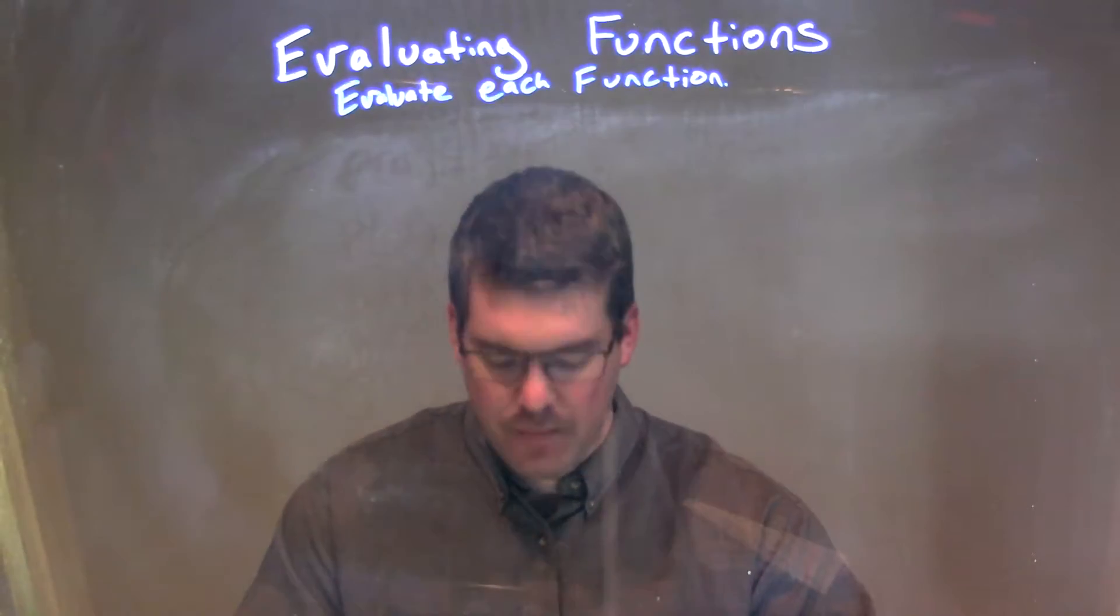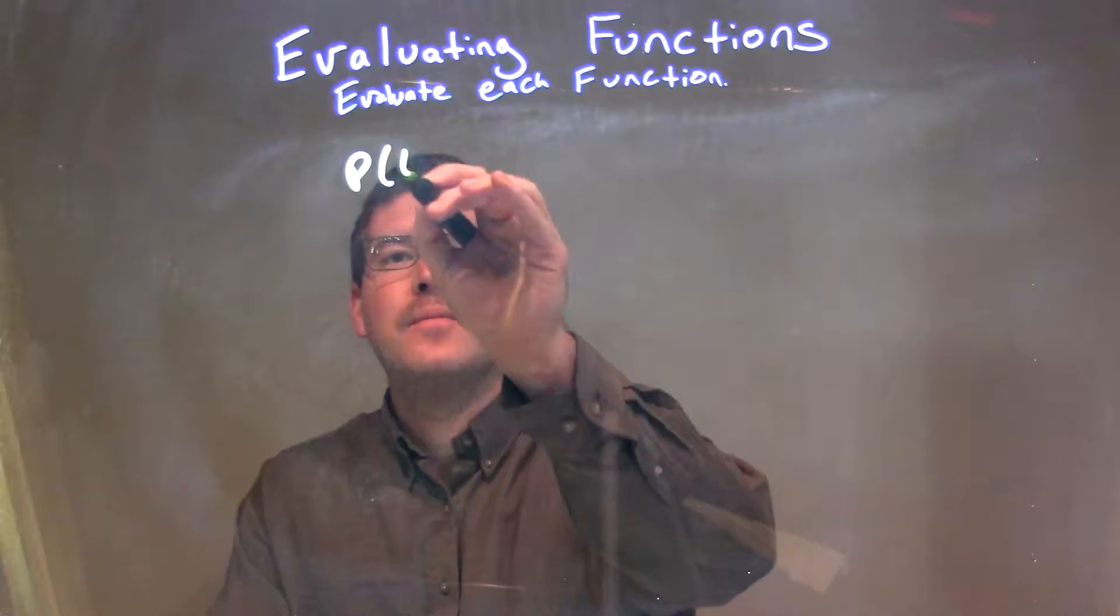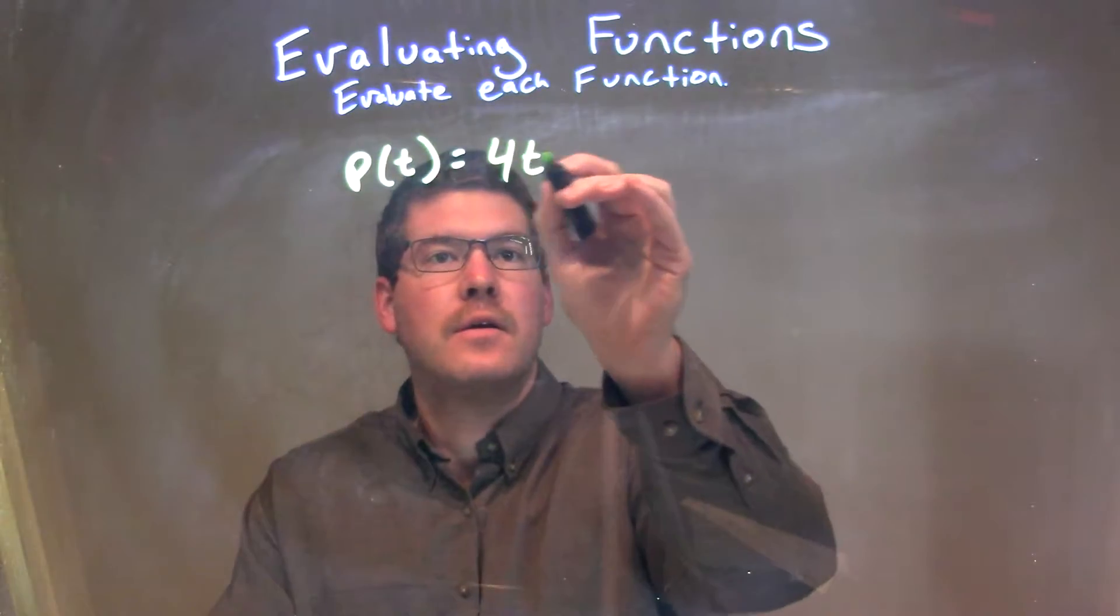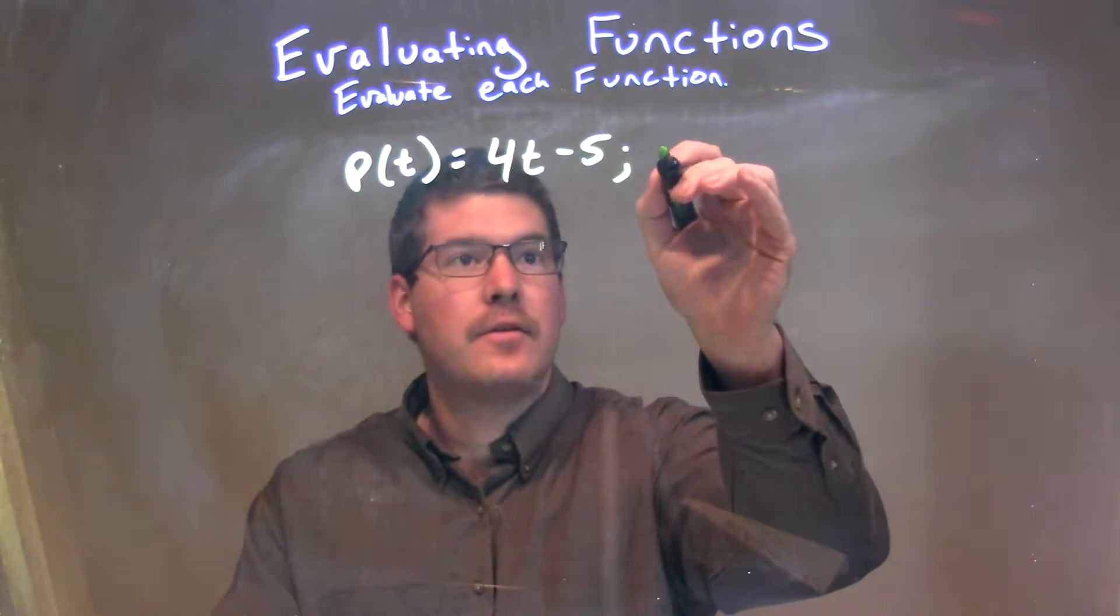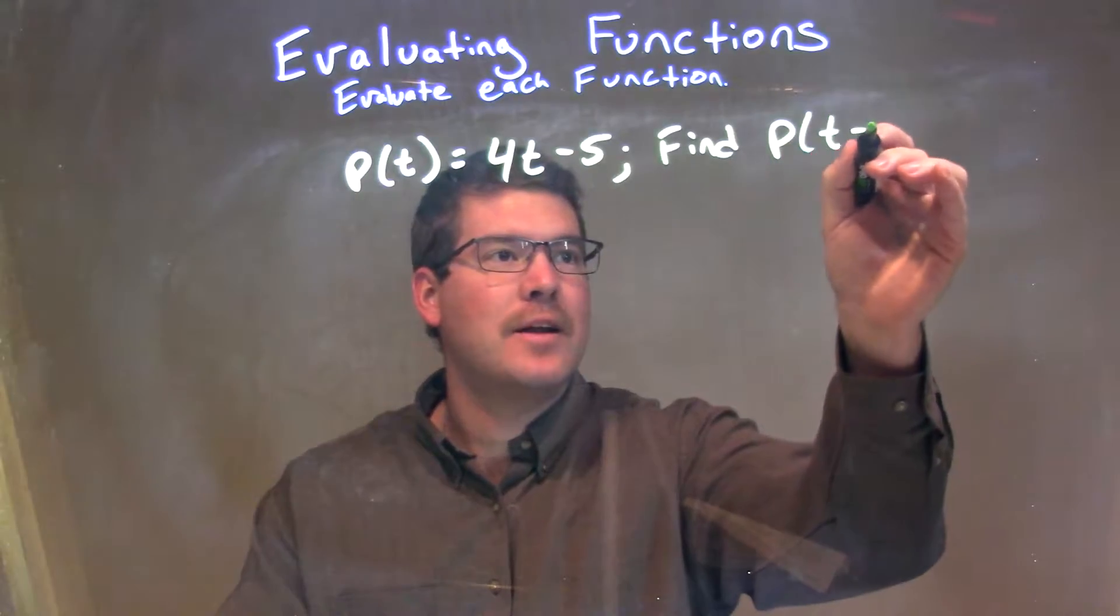I'm going to evaluate each function. I was given this function: P of t is equal to 4t minus 5. And we're going to find P of t minus 2.